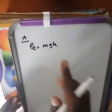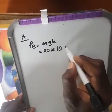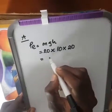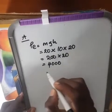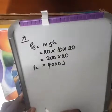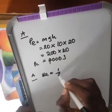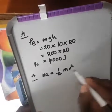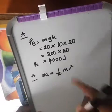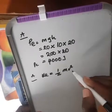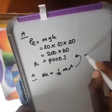At point A, potential energy = mgh = 20 × 10 × 20 = 4,000 joules. For kinetic energy at A, we use KE = ½mv². We don't have velocity, but at point A since potential energy is maximum, kinetic energy at this point is zero joules.